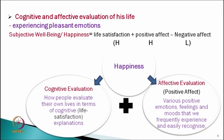Next, scholars expanded this model a little bit more. They said cognitive and affective evaluation of life is happiness — experiencing pleasant or positive emotions. There are two components: one is cognitive evaluation, which is life satisfaction, and another is affective evaluation, meaning positive emotions and lack of negative emotions. The total model is: if we have a high score on life satisfaction and positive affect, and a low score on negative affect, that is our high level of happiness.